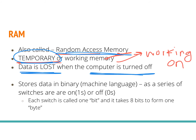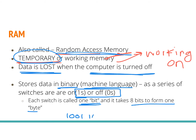RAM stores data in binary, or machine language, as a series of ones and zeros — those on and off switches. Each switch is called one bit, so every one or zero is called one bit. It takes eight bits to form a byte. So you'll have eight bits — one through eight — and that group of eight bits is called a byte. That's how things are stored in the machine language of our RAM.